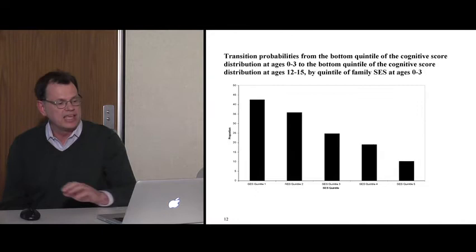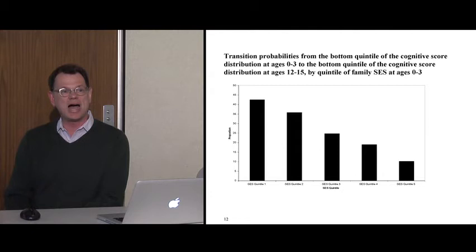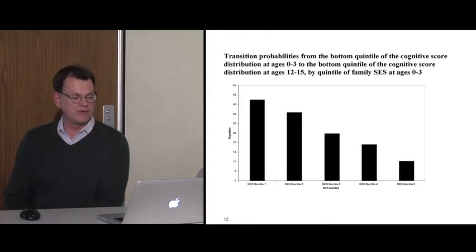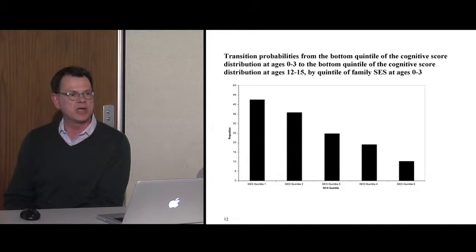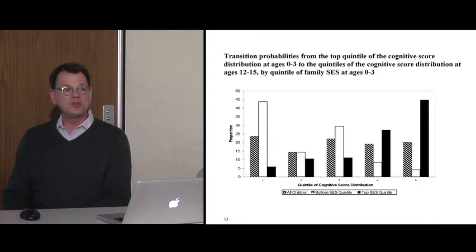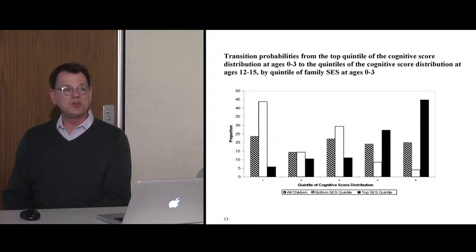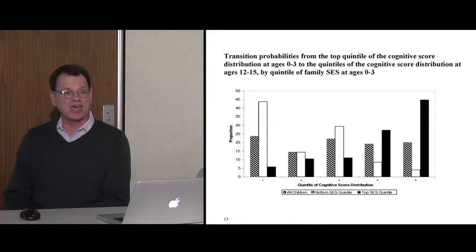If things go well at age zero to five — if you were in the top quintile of cognitive achievement — where are you at age 11 to 13? If you come from the poorest families, there is a very high probability you've slipped back down to the bottom quintile of cognitive achievement. However, if you come from the richest families, there is a quite high probability that you've maintained your position.